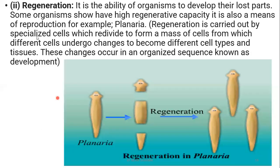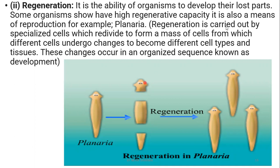The next process is called regeneration. Regeneration means the ability of every part of an organism to produce a new individual like itself. For example, Planaria - if it is cut at different points, each part has the ability to generate a new Planaria.